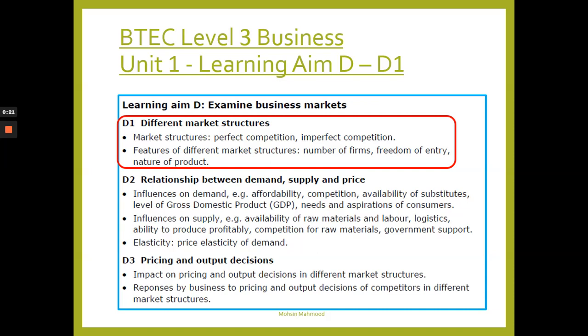The market structures include perfect competition and imperfect competition, and we'll also be looking at features of different market structures - the number of firms, freedom of entry and exit, and the nature of product.